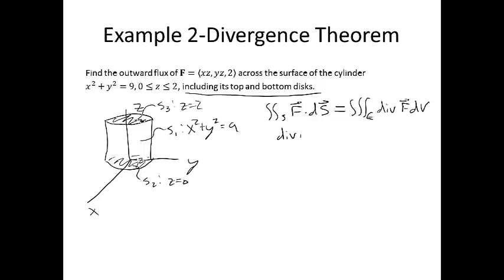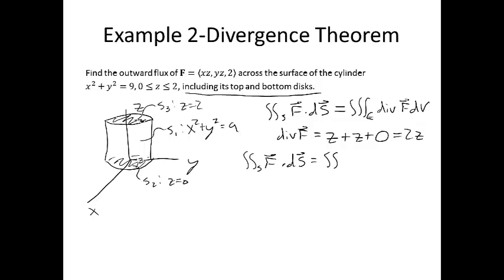First off, the divergence of the vector field would be the partial derivative of the first component with respect to x — that's going to be z — plus the partial derivative of the second component with respect to y, which is z, plus the partial derivative of the third component with respect to z. So altogether we have 2z. Therefore our surface integral is the triple integral over E of 2z dV.